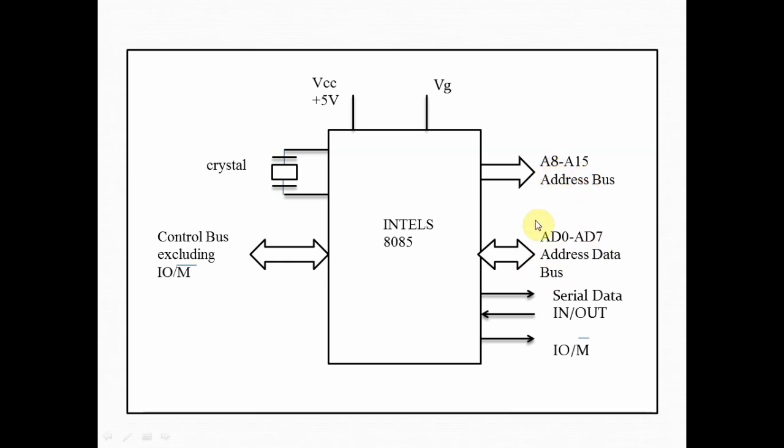To select the external memory or I-O devices, 8085 uses the I-O mapped I-O system or I-O M-Bar system. The power supply required is plus 5 volts and the crystal frequency of 3 megahertz is required which is a single phase clock. Also the control bus is available for transferring different control signals from the microprocessor to other devices.